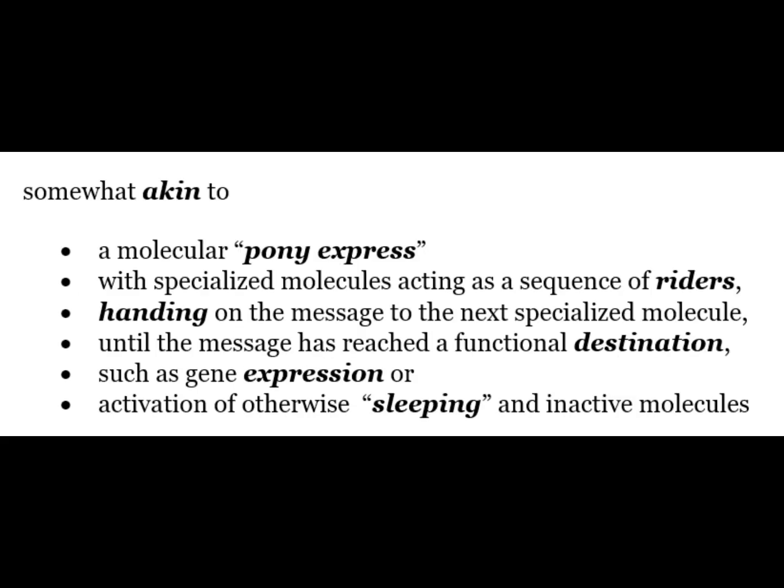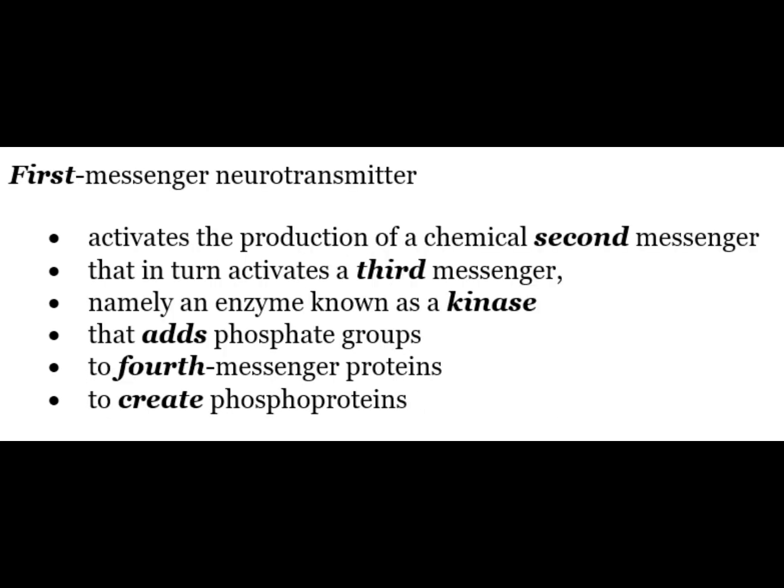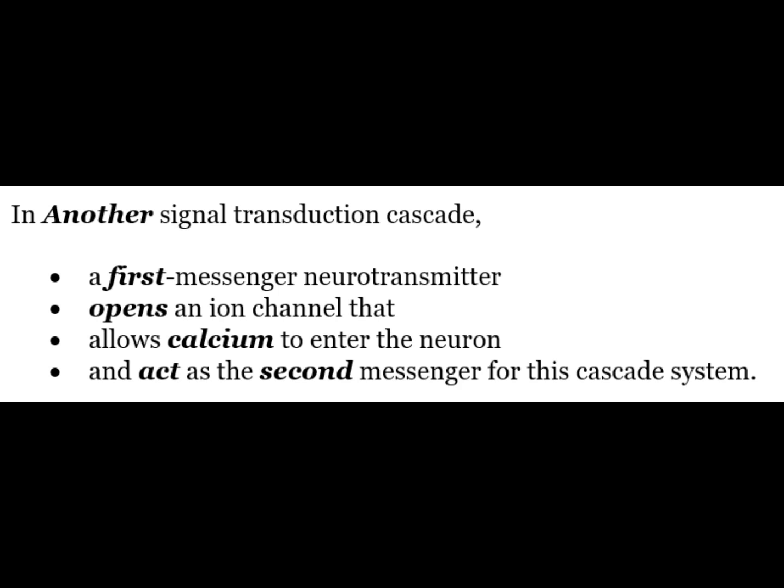This is somewhat akin to a molecular pony express with specialized molecules acting as a sequence of riders handing on the message to the next specialized molecule until the message has reached a functional destination such as gene expression or activation of otherwise sleeping and inactive molecules. A first messenger neurotransmitter activates the production of a chemical second messenger that in turn activates a third messenger, namely an enzyme known as a kinase that adds phosphate groups to create phosphoproteins.